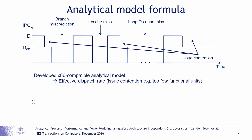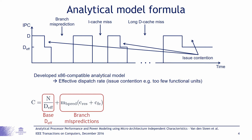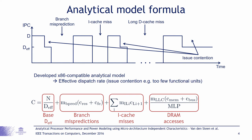All of this results in a formula which calculates the number of cycles it takes to execute an application. We first calculate the execution time without blocking events, but with throttled performance using the effective dispatch rate. Next, we add all blocking events: branch mispredictions multiplied by their resolve time, instruction cache misses and long latency DRAM accesses multiplied by their fetch time. The latter is also divided by the memory level parallelism because multiple misses can be processed in parallel by the DRAM. The last term calculates a penalty for chained last level cache hits. For a more detailed discussion about all these components, I would again refer you to the paper.